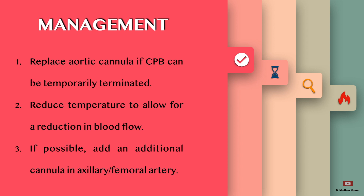How do you manage? Replace the aortic cannula if CPB can be temporarily terminated. Reduce the patient temperature to allow for a reduction in blood flow rate. If possible, add an additional cannula in the axillary or femoral artery to continue the surgery.